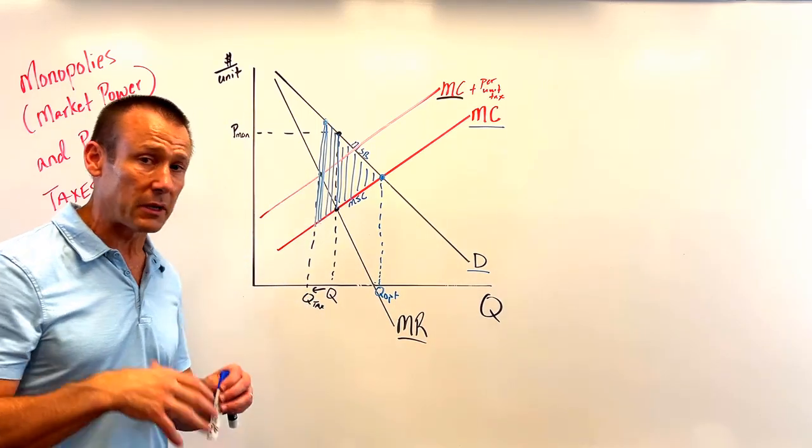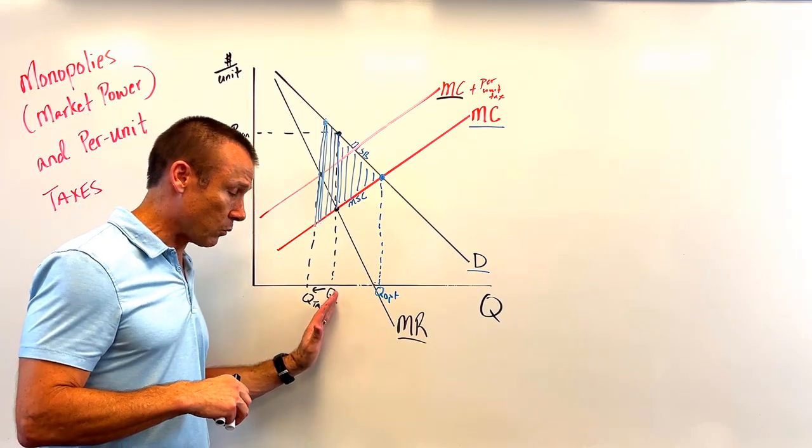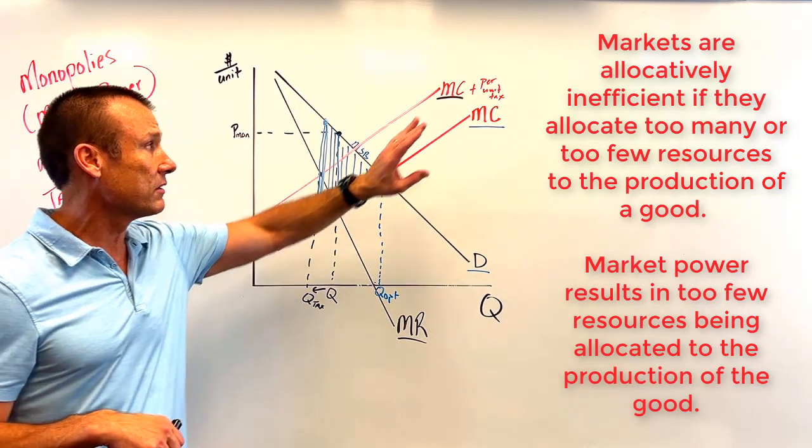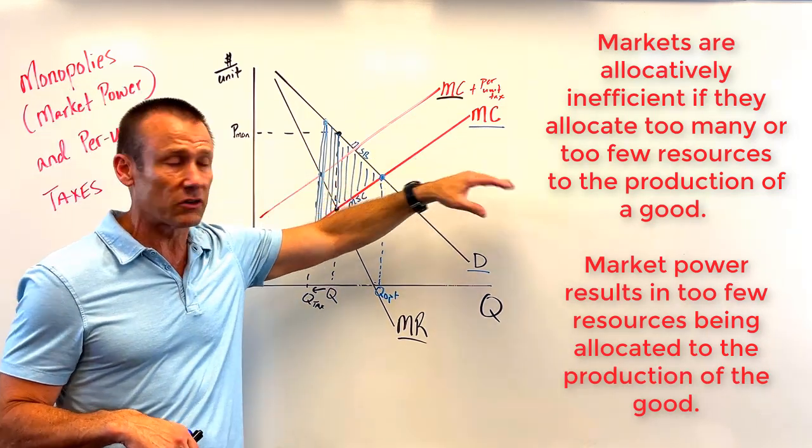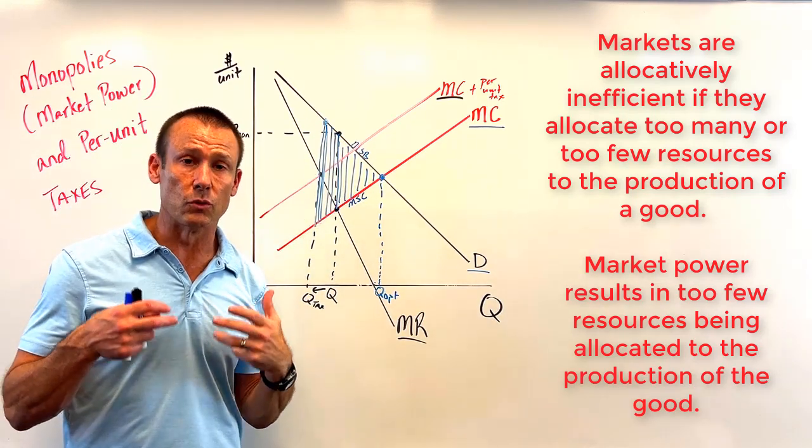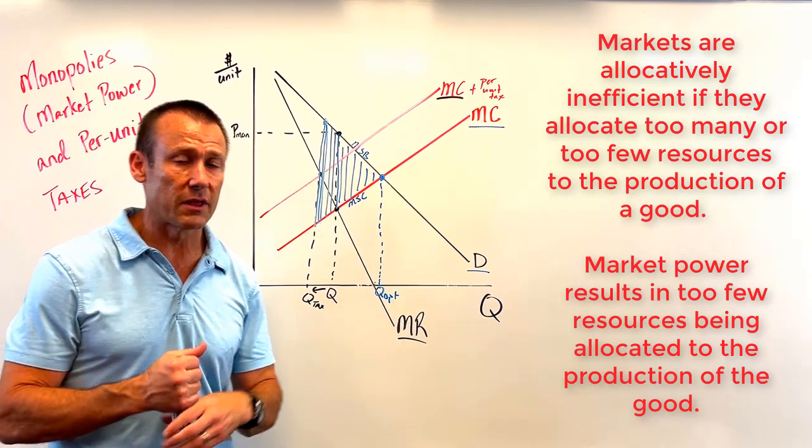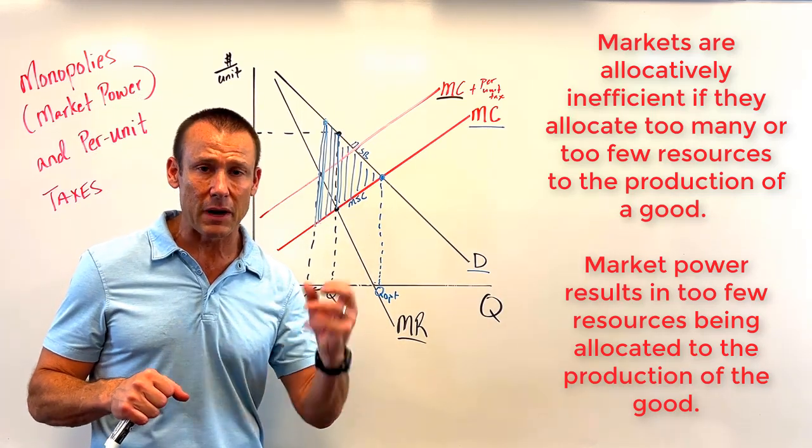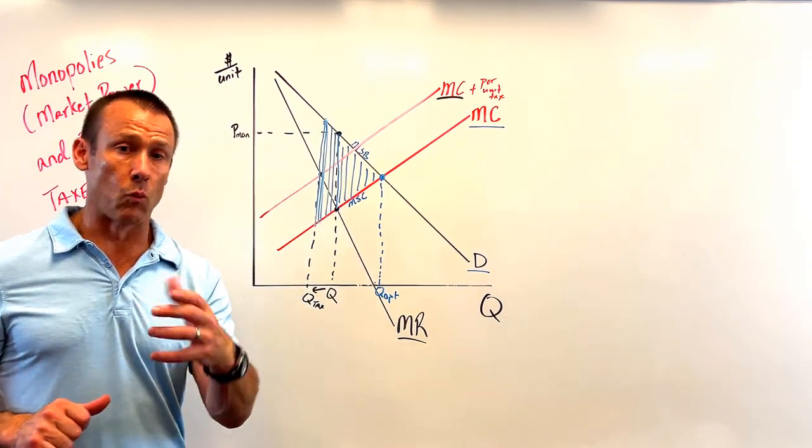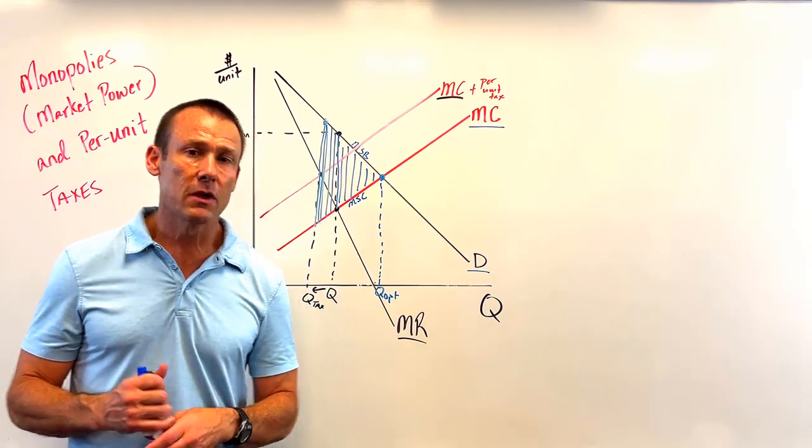You can see that triangle getting bigger. There it is. There's the MSB, the MSC. We just have more mutually beneficial transactions not taking place. We're becoming more allocatively inefficient. We were underproducing the good; now we're going to underproduce the good even by more. Because again, a per-unit tax changes that marginal cost curve by shifting it up, which means basically the supply curve is shifting left, and we're going to supply less of the good. So generally, economists—this is not the way they're going to go when they see market power. They're not going to go with the per-unit tax.